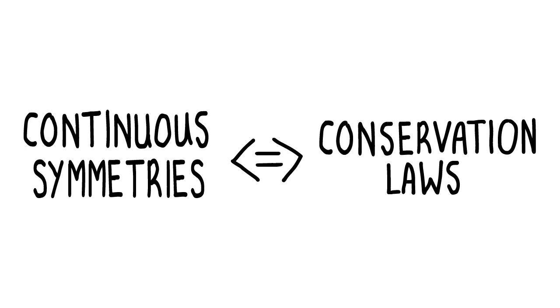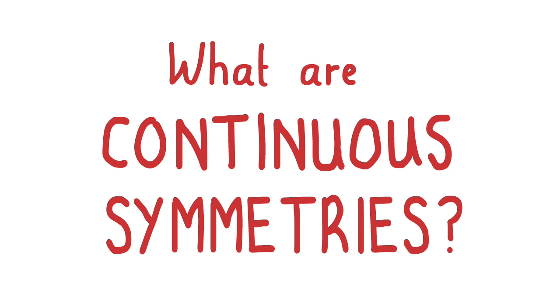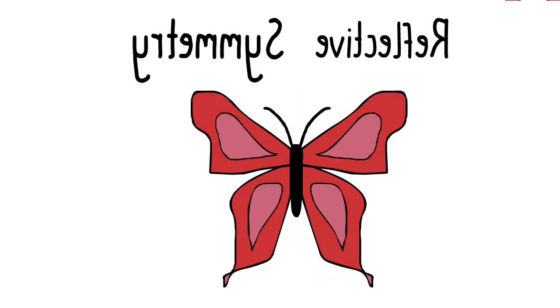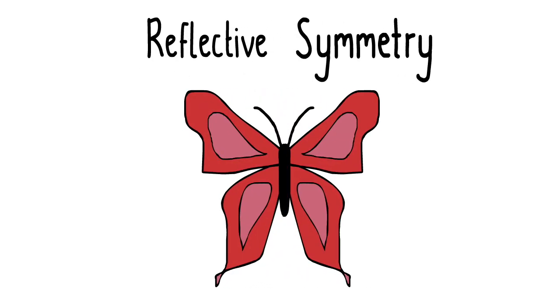But what is a continuous symmetry? The word symmetry is usually used when something remains the same when it's flipped about an axis, for example like flipping a butterfly about its body. Unlike the writing, which appears back to front, the butterfly looks the same when reflected about its axis of symmetry. This is a discrete symmetry. It's only symmetric under a finite line of symmetry.